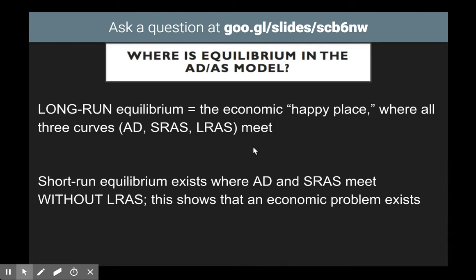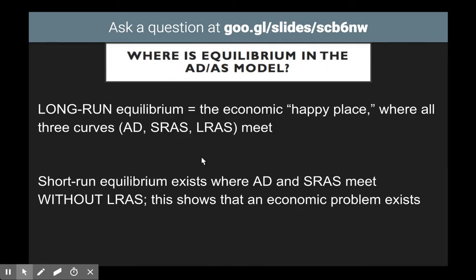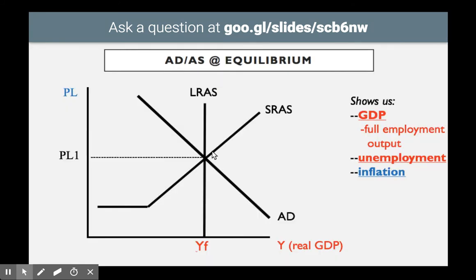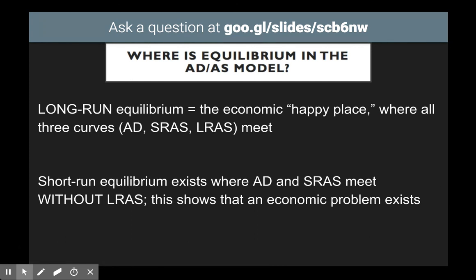Long run equilibrium is where all three curves intersect. If a graph shows all three not meeting, we are not at long run equilibrium, and we want to figure out what can get us back there. The next graphs will show economic problems — inflation, recession, or depression — and what governments or economies can do to return to long run equilibrium. That will be in the next part of this video, so take a look at the next video posted. See you in a second.